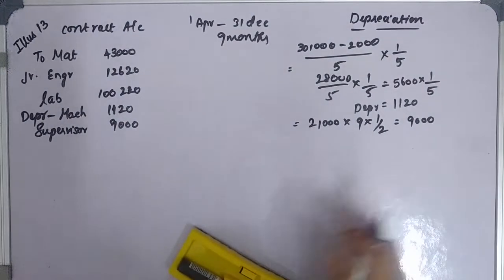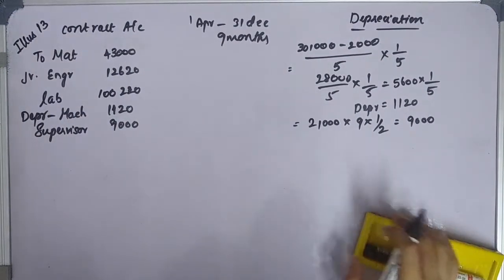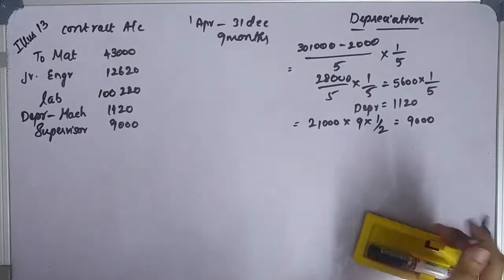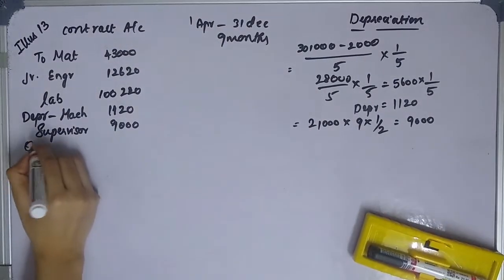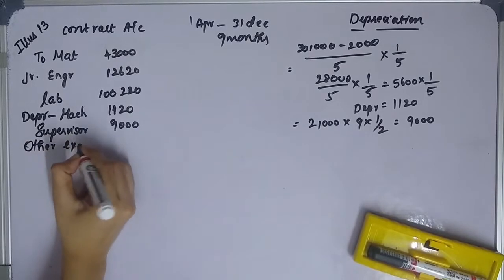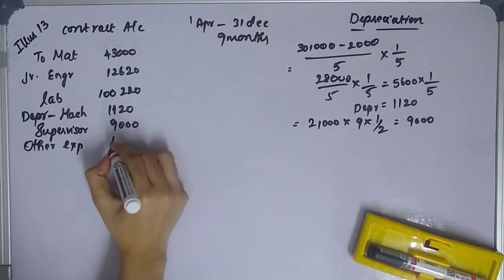All other expenses are 14,000. This amount is charged to the contract account as given in the question.